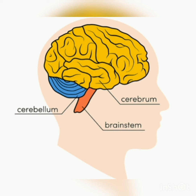Next we have the cerebellum. It is smaller than the cerebrum and is located at the back of the head, just below the cerebrum, as you can see in the picture. Basically, this part of the brain controls and coordinates our voluntary movements — like how we can stand, sit, walk, and run, meaning our posture and balance.